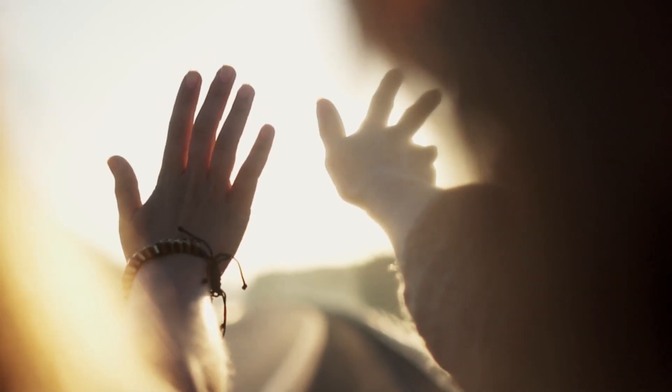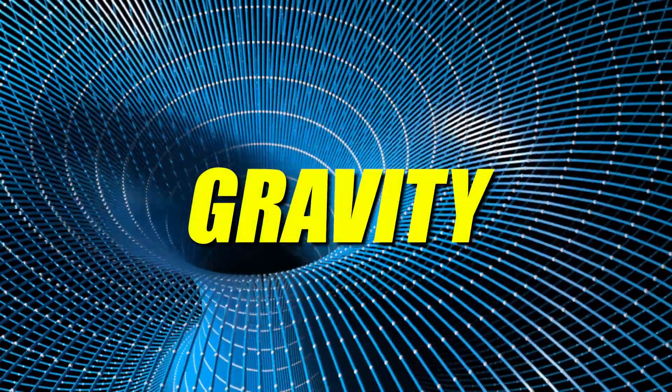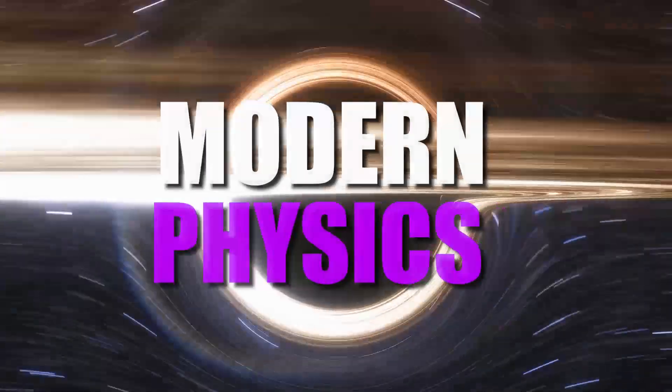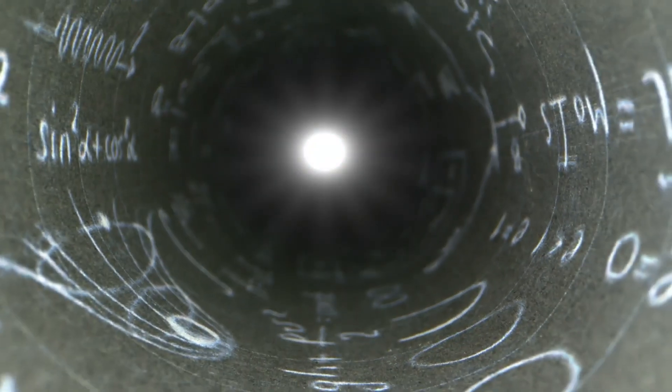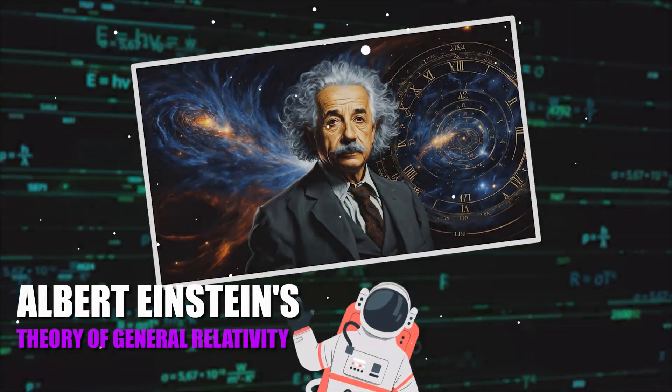Understanding how light, a massless entity, is influenced by gravity is one of the intriguing aspects of modern physics and is best explained through Albert Einstein's theory of general relativity.